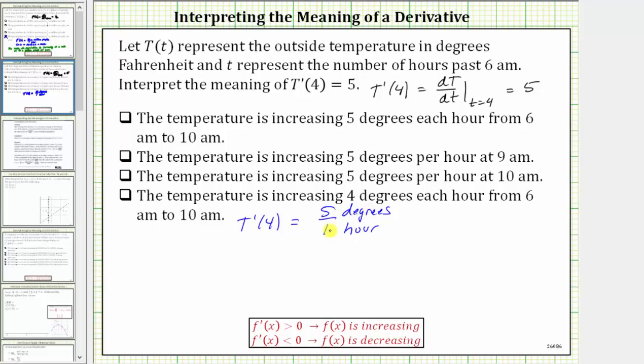This gives us the instantaneous rate of change at t equals four. We now know the temperature is increasing by five degrees per hour when t equals four. The last step is to interpret the meaning of t equals four, where little t represents the number of hours past 6 a.m. So t equals four corresponds to the time 6 a.m. plus four hours, which would be 10 a.m.